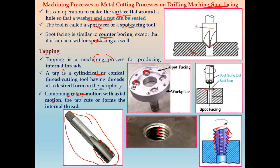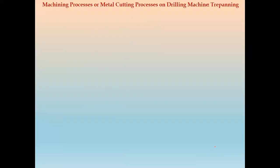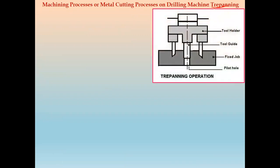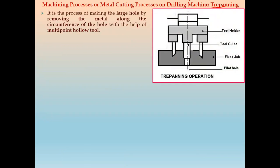The next operation that can be performed on a drilling machine is trepanning. In the trepanning operation, a large hole is made by removing metal along the circumference of the hole with the help of a multi-point hollow tool. The tool has multiple cutting points arranged around a hollow center, allowing a large hollow hole to be produced.